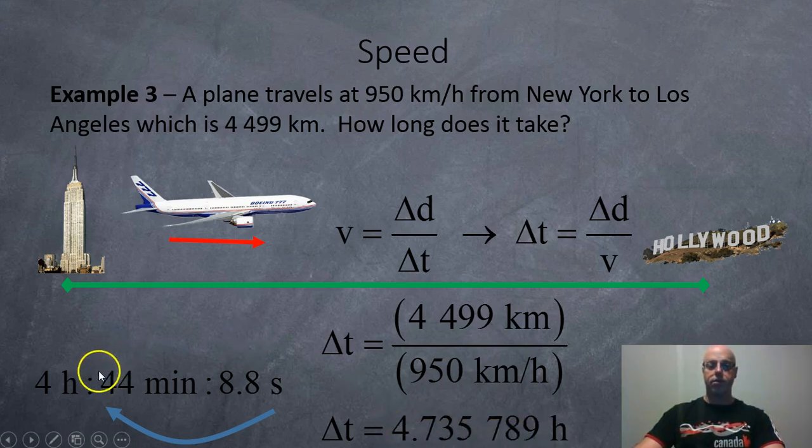So, if I, on my calculator, subtract 4, I'll be left with 0.73579. You're going to multiply that by 60 and it's going to be 44 point something minutes. So, I'm going to subtract the 44 on my calculator and get point something something something. Multiply that by 60 and I get 8.8 seconds. So, 4 hours, 44 minutes and 8.8 seconds.